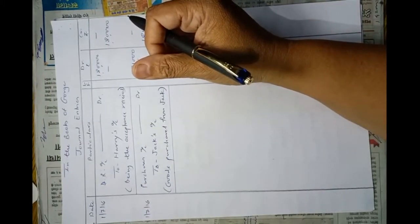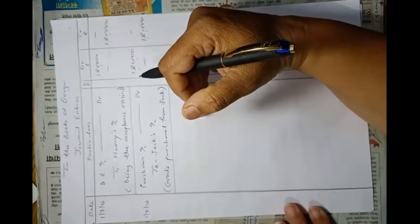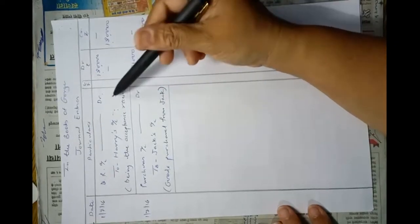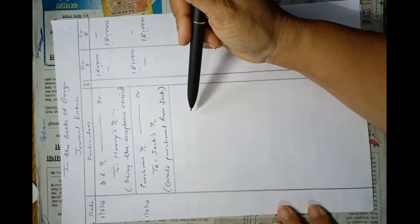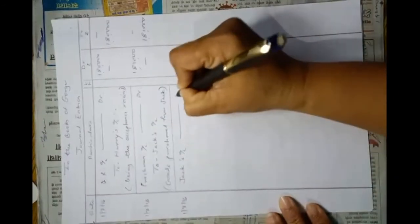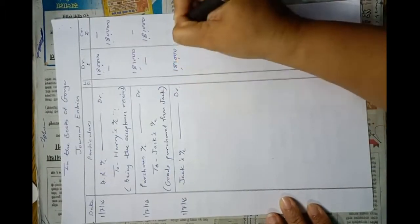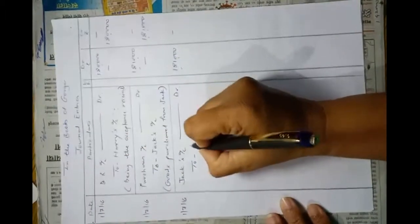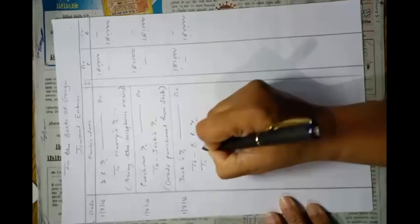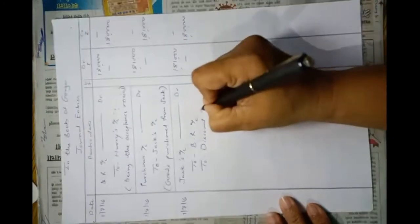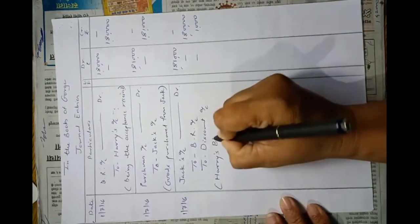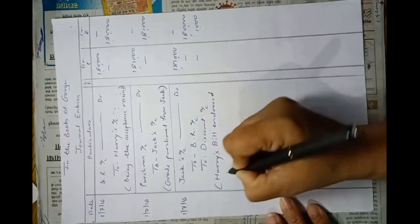Now, George endorsed Harry's acceptance to Jack in full settlement. So on 1st July 2016, Jack's account debit Rs. 1,81,000 to Bills Receivable account Rs. 1,80,000 and to Discount account Rs. 1,000. Narration: Harry's bill endorsed to Jack.